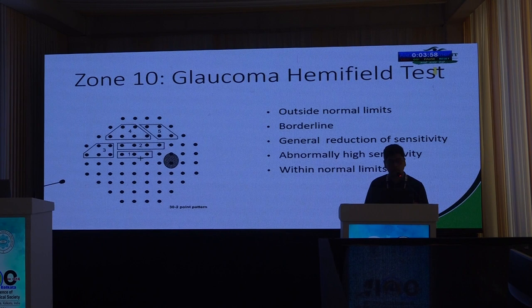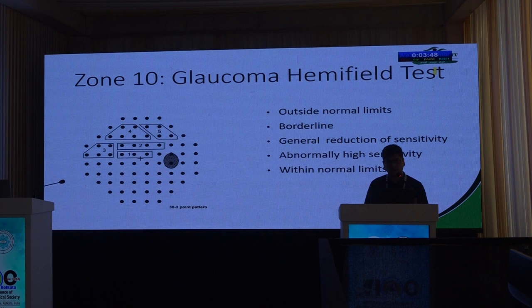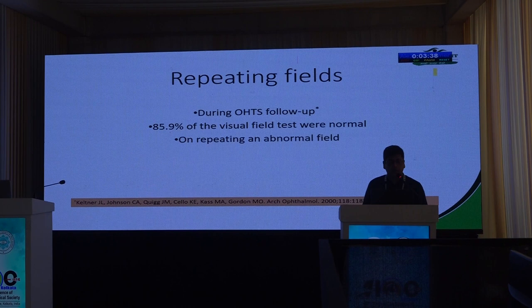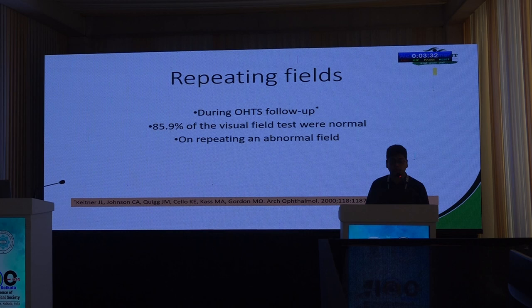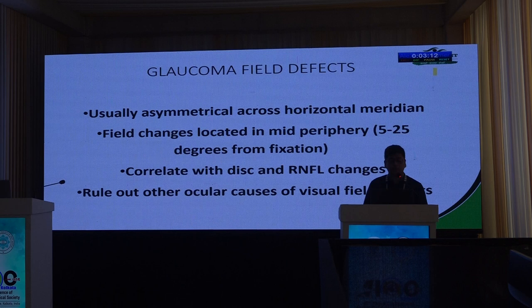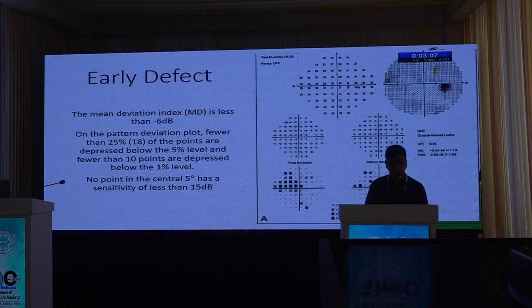Zone 10 is the Glaucoma Hemifield Test. In glaucoma, the two hemifields are affected asymmetrically, so one is tested against the other; typically it will read 'outside normal limits.' Anderson's criteria can be used to diagnose glaucomatous fields. Fields should be repeated — during OHTS follow-up, up to 86% of abnormal fields on first testing came out normal on repeat. Glaucomatous field defects are typically asymmetrical across the horizontal meridian, located 5–25 degrees in the mid-periphery, and correlate with disc and RNFL changes.